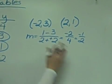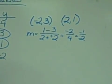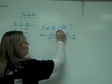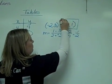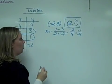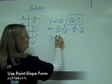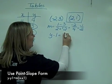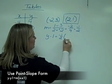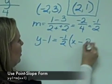Again, I could use either ordered pair to write my linear equation. I'm going to choose two, one, because they're both positive numbers and rather small. And I'm going to write my equation, y minus one equals negative one-half times the quantity x minus two.